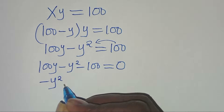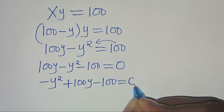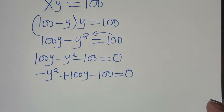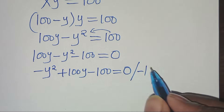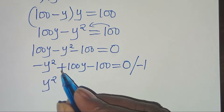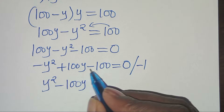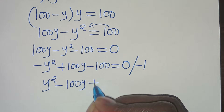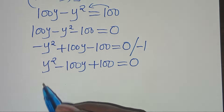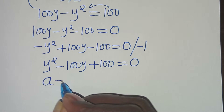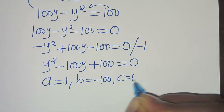Rearranging, we have minus y squared plus 100y minus 100 equals 0. Dividing through by minus 1 gives y squared minus 100y plus 100 equals 0. This is a quadratic equation where a equals 1, b equals minus 100, and c equals 100.